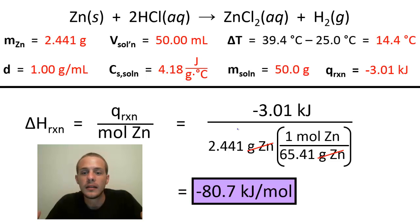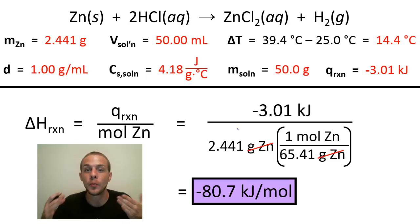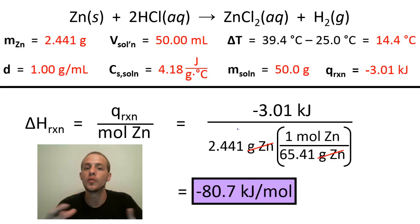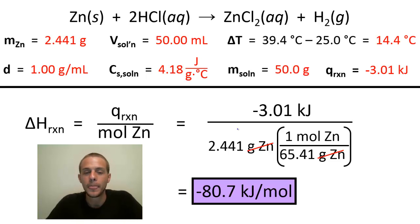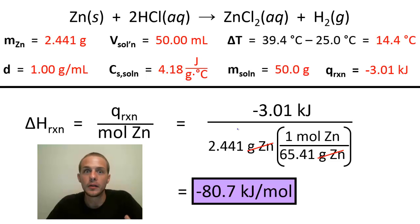So we found that delta H = −80.7 kJ/mol, meaning 80.7 kJ of energy is released into the surroundings when one mole of zinc reacts with two moles of HCl to produce one mole of zinc chloride and one mole of hydrogen gas. That is constant pressure calorimetry — used to find delta H, the change in enthalpy, which is heat absorbed or released under constant pressure. Since heat is released and delta H is negative, this is an exothermic chemical reaction.